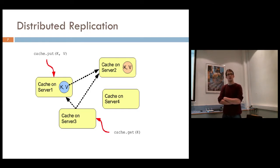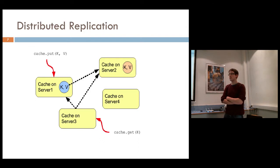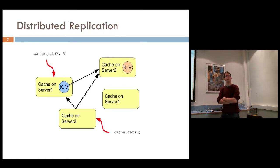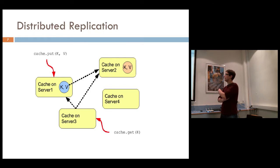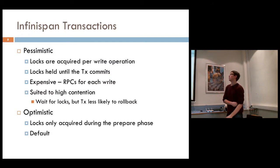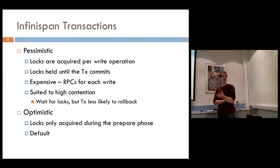Put requests are a bit more interesting. If you're going to put data to an InfiniSpan node, the consistent hash function determines where the key will be stored. If one of those replicas is on your local node, you just send a remote procedure call to the replica nodes. However, if you're on server three issuing a put, the key would have to be sent remotely to server one and two to be stored on the appropriate node. That's in a non-transactional sense.